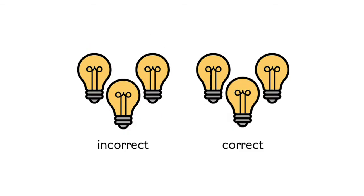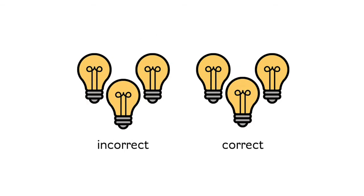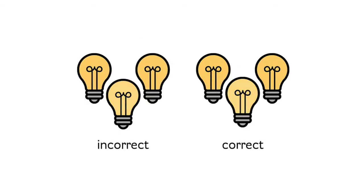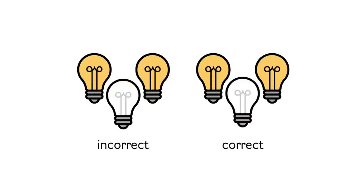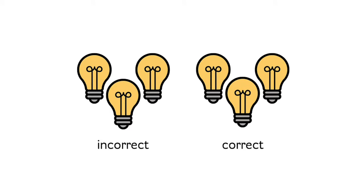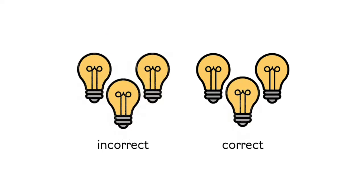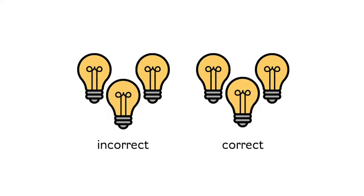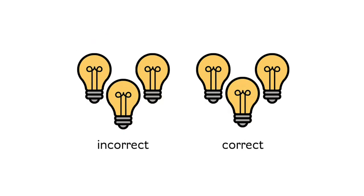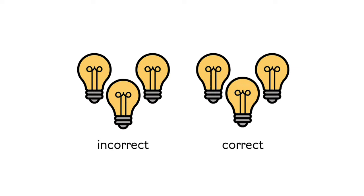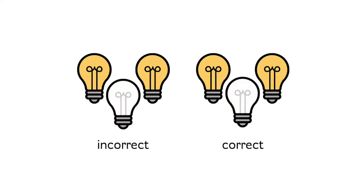Second, this shift entails attention being directed towards the grammatical features of the language. As a summary, focus on form requires the students to focus on the grammatical correctness or incorrectness of the second language.